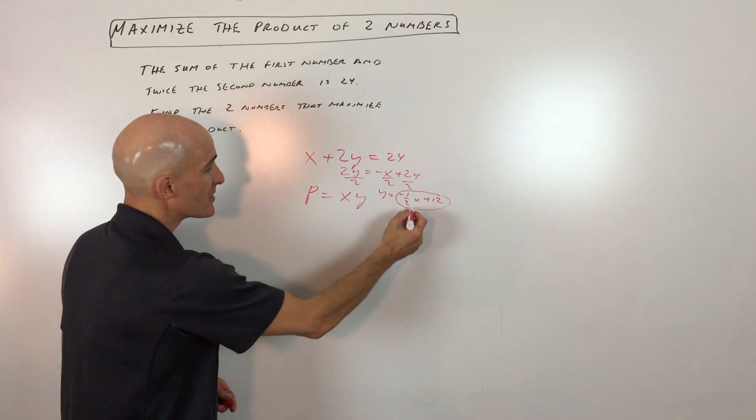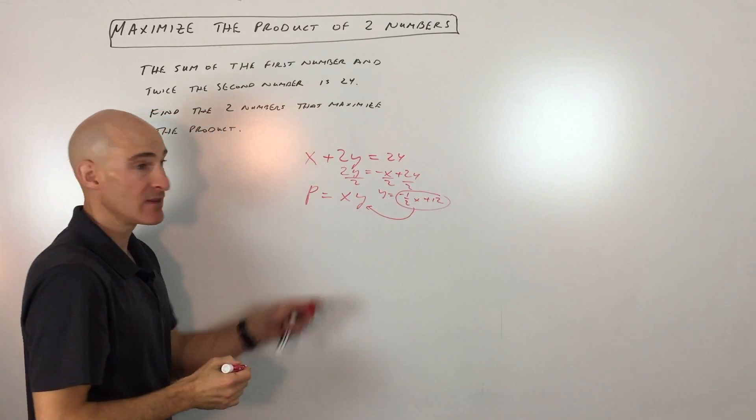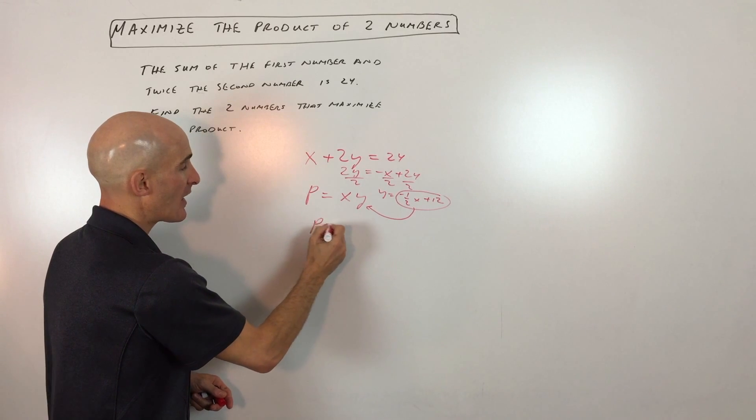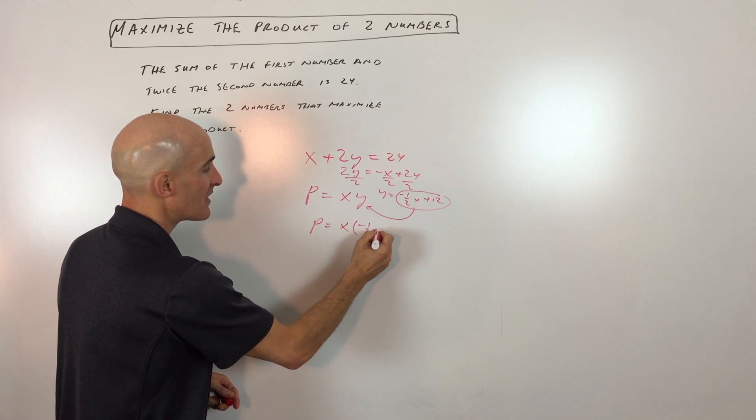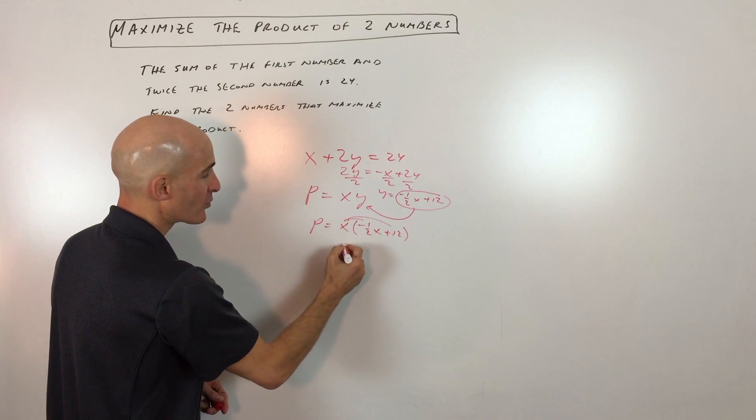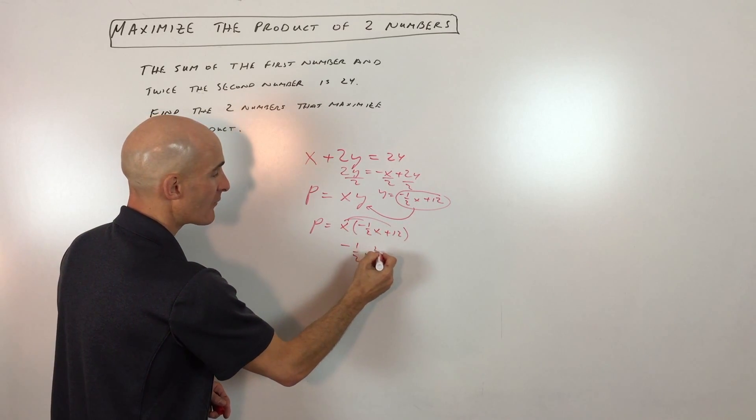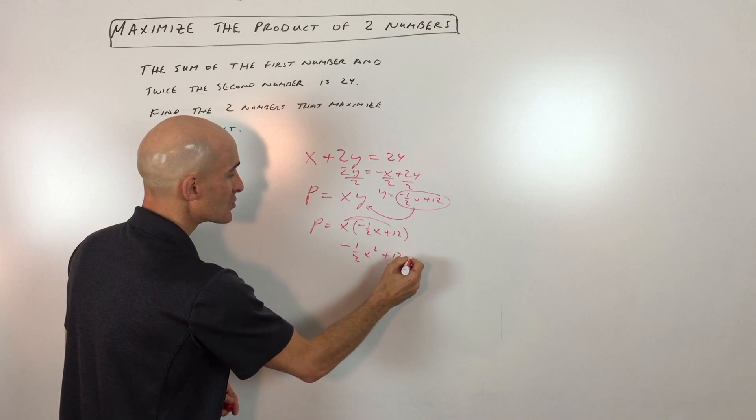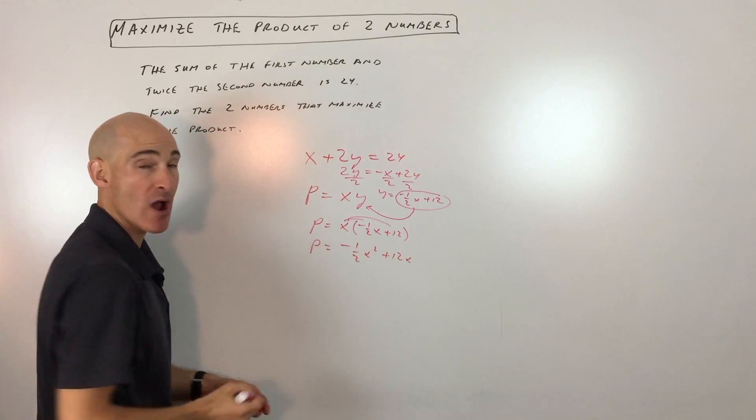Now since we know what y equals, let's go ahead and put that in place of y in the product equation, and we have p equals x times negative one-half x plus 12. We can distribute the x to both of these, so that gives us negative one-half x squared plus 12x equals the product.